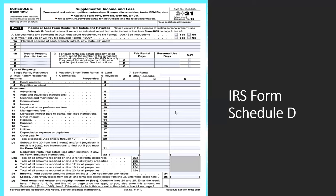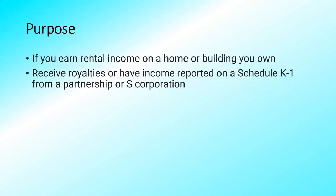We have an example form here for you guys to look at. This is your basic supplemental income and losses, and it's used for rental income and also if you have any kind of partnerships. You may have a form K-1 that comes from a corporation or any other kind of partnership, and that information is taken here as well. The purpose is: if you earn rental income on a home or building you own, receive royalties, or have received income reported on a Schedule K-1 from a partnership or S-Corporation.